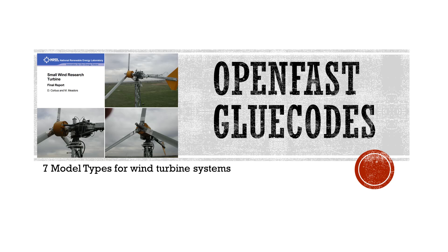We often focus on the 5 MW wind turbine model when we are talking about OpenFast, but there exist at least seven model types for wind turbine systems. Hi there and welcome to Catchment of Resources. In this video, I'm going to look at the different model types under OpenFast, to which someone can actually study the materials as well as carry out design for the wind turbine systems.